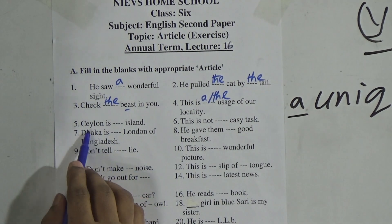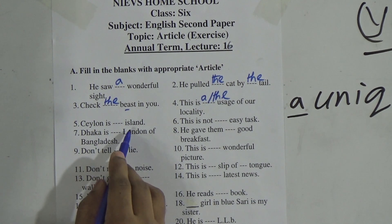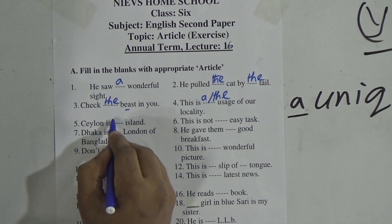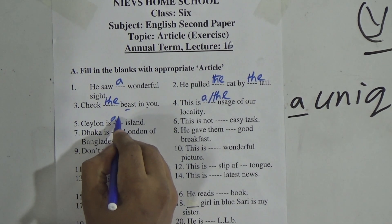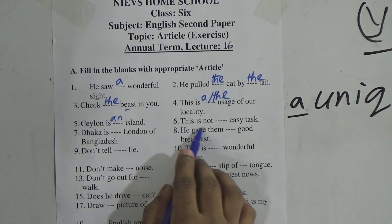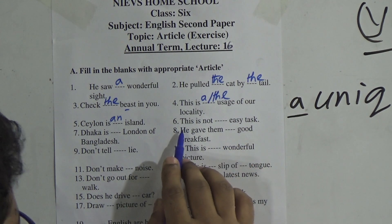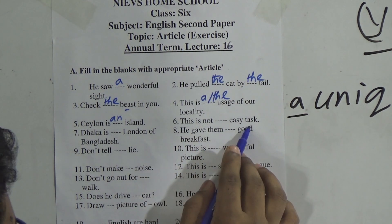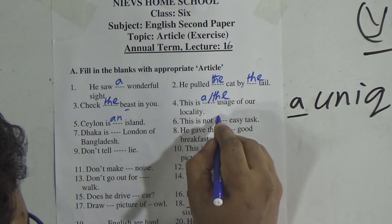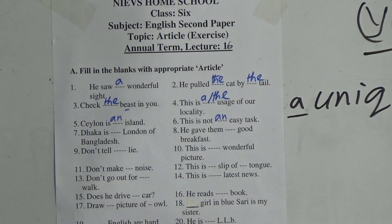Ceylon is an island. 'I' is a vowel here, so we use 'an'. Number six: This is no, this is a tusk. 'E' is a vowel here, so we use 'an'.